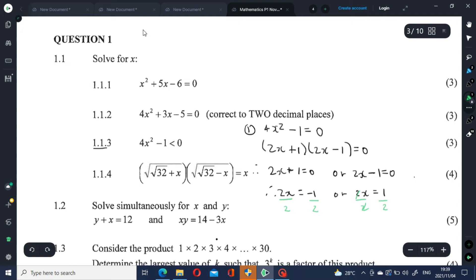2s cancel. So therefore, x should be equal to negative half or it should be equal to positive half. But these solutions are not necessarily the solutions to the inequality. These solutions satisfy the equation.